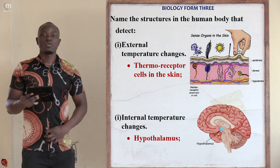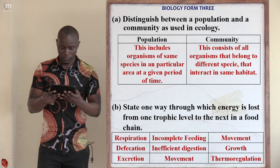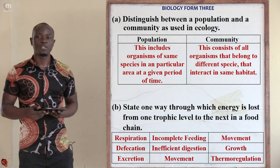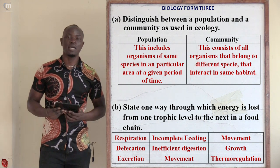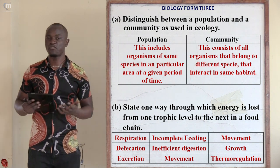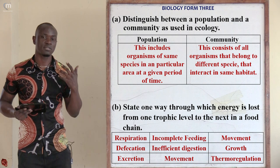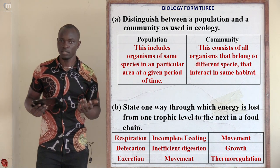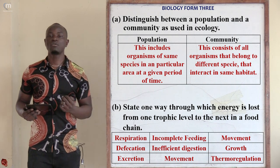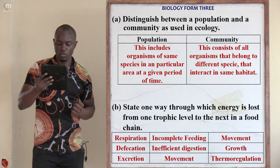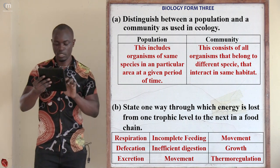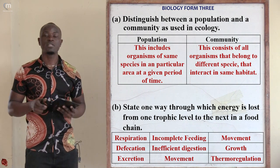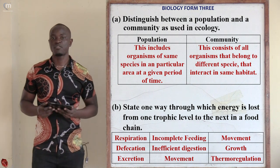Question twenty-five: distinguish between population and community as used in ecology. Distinguishing is the same as differentiating. So what is a population?